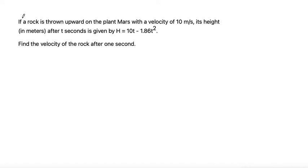This problem says if a rock is thrown upward on the planet Mars with a velocity of 10 meters per second, its height in meters after t seconds is given by H = 10t - 1.86t².